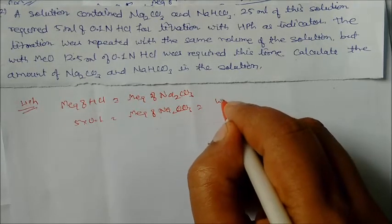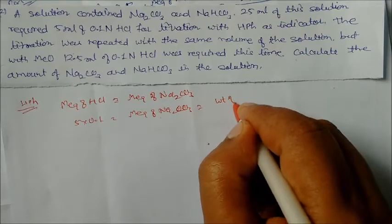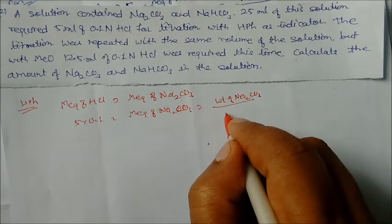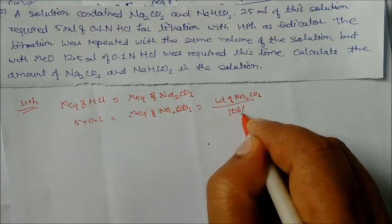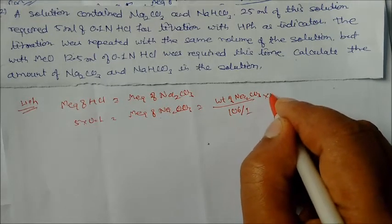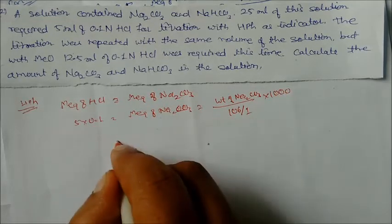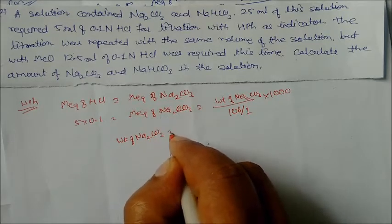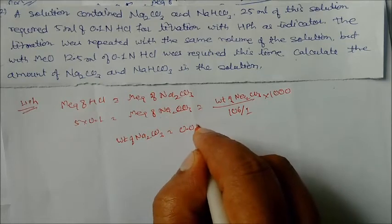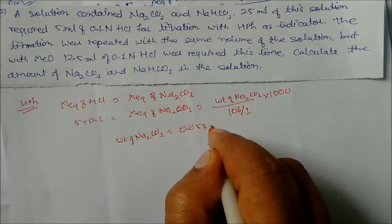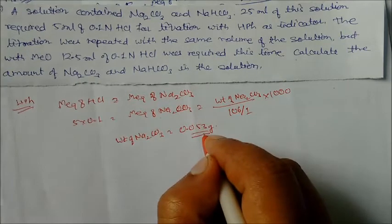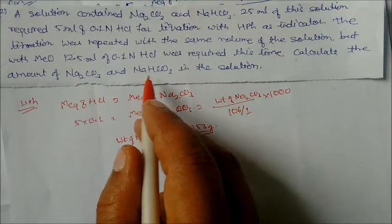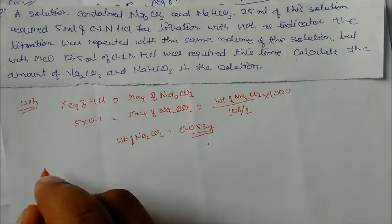Milliequivalents of Na₂CO₃ = weight of Na₂CO₃ divided by equivalent mass, multiplied by 1000. From this, we get the weight of sodium carbonate = 0.053 grams.